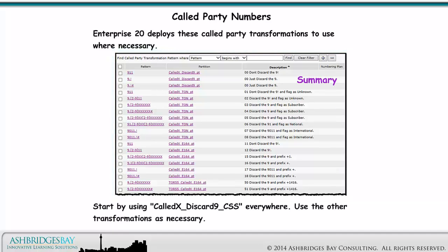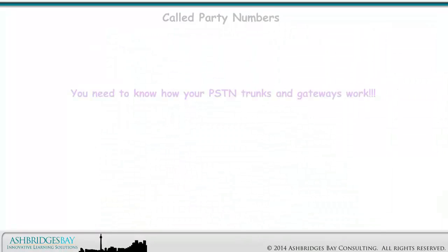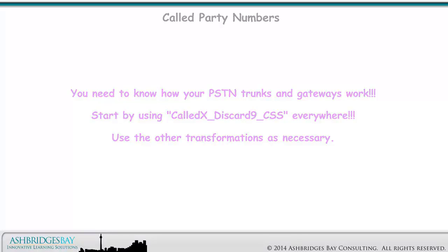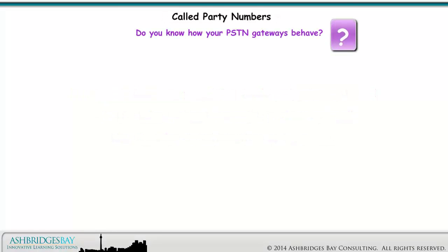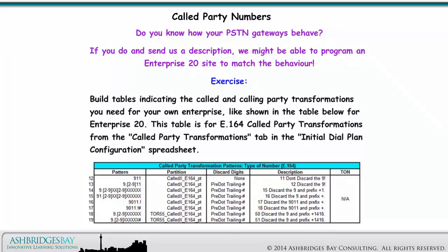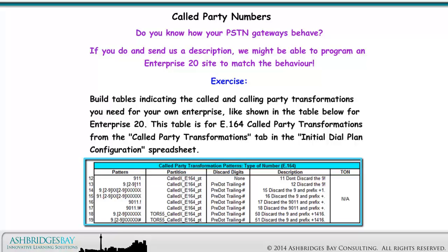Start by using called X discard 9 calling search space everywhere. Use the other transformations as necessary. Do you know how your PSTN gateways behave? If you do, send us a description and we might be able to program an Enterprise 20 site to match the behavior. Here's an exercise: build tables indicating the called and calling party transformations you need for your own enterprise, like shown in the table below for Enterprise 20. This table is for E.164 called party transformations from the called party transformations tab in the initial dial plan configuration spreadsheet.